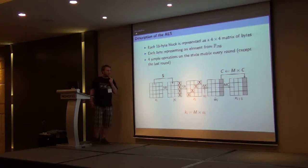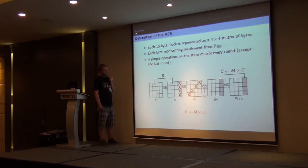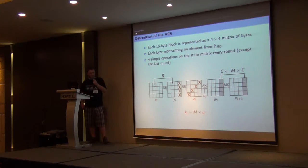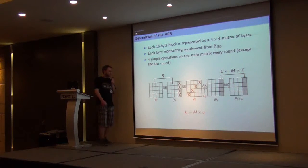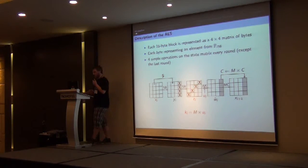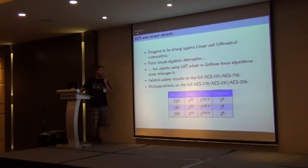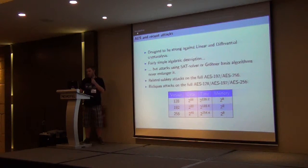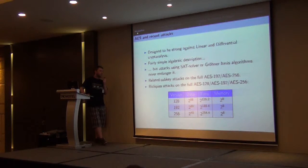In some cases, we are interested in swapping the order of the two last operations. In that case, we denote the subkey used in the AddRoundKey operation by U, and it is related to the original subkey by some linear combination. I denote by X the state just before SubBytes and by Z the state just after ShiftRows. The AES was designed to be resistant against linear and differential cryptanalysis, and attacks based on SAT solvers or Gröbner basis algorithms are still far from breaking it.